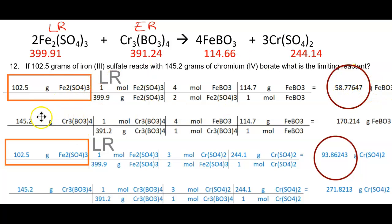Between these two reactants, iron sulfate produced the least amount of iron borate. If I would have taken these two reactants and gone to chromium sulfate, iron sulfate produced the least amount of chromium sulfate. So my limiting reactant in this case is iron sulfate. My excess reactant is by default the other reactant, therefore chromium borate.